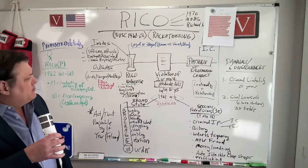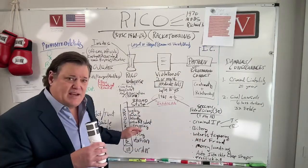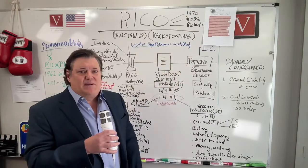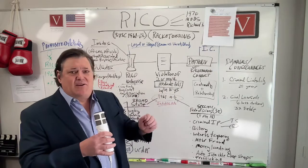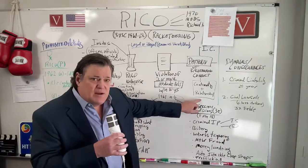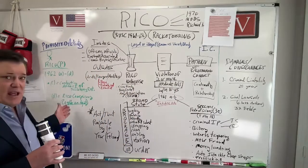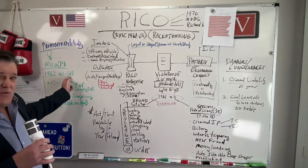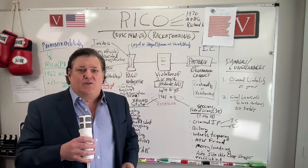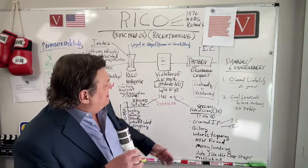A quick way to think of the RICO statute: you have the enterprise, you need a violation of two or more predicate acts, and it needs to constitute a pattern of racketeering activity — a pattern. There has to be some kind of pattern, not isolated incidents. There has to be continuity and relationship. If you have the enterprise, the predicate acts, and an ongoing criminal racketeering enterprise, and you meet one of the grounds for liability under 1962 A through D, then you can get to damages.